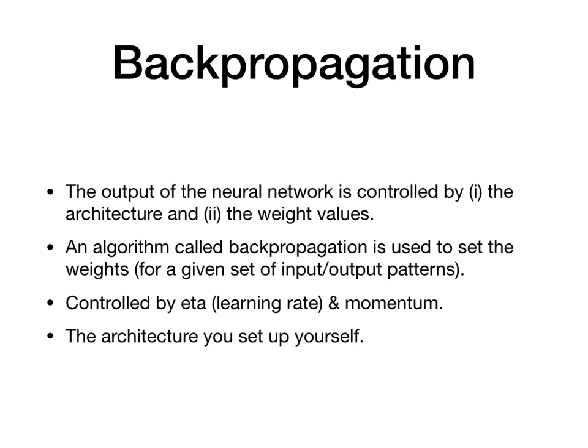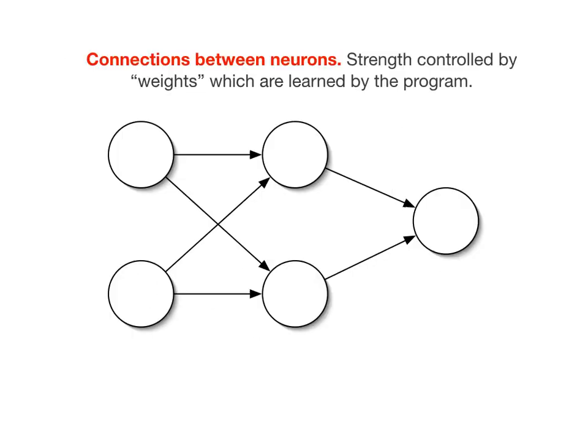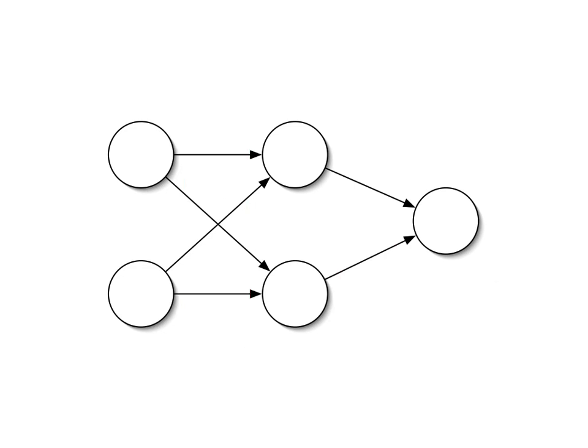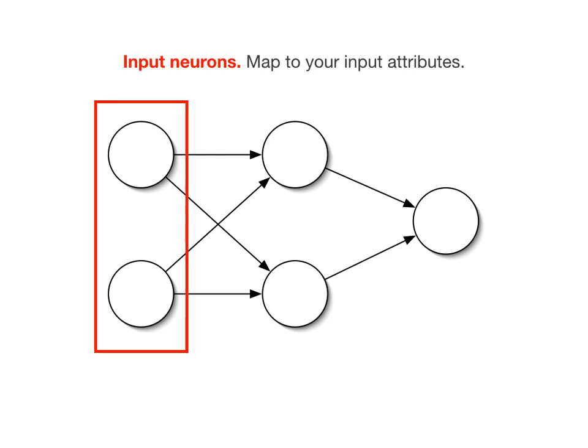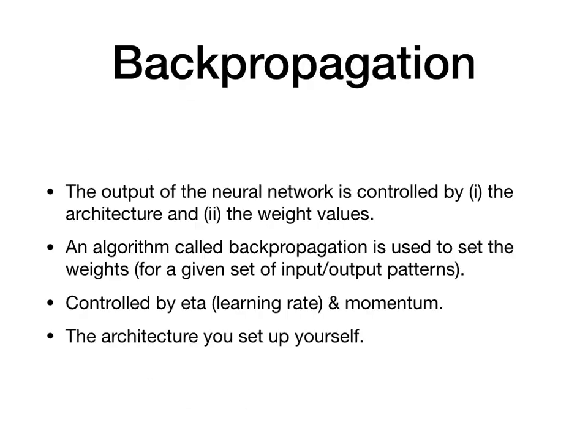When running our network, we need to set those weights. The output of the neural network is controlled by two things: one is the architecture — which neurons we have, how many hidden layers, how many neurons in the hidden layer — and the other is the weights. The topology we need to set up ourselves, but the weights are automatically produced using the backpropagation algorithm, at least in the multilayer perceptrons we're looking at. The idea is you give it a training set with known inputs and outputs, and backpropagation will find the weights that map between the two. Backpropagation is often controlled by two parameters: a learning rate eta, and a momentum which helps with training sometimes.